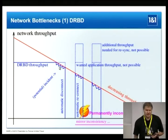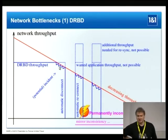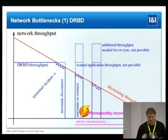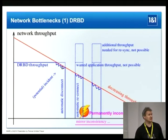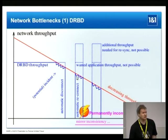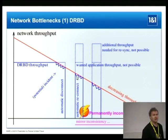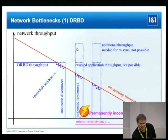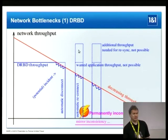But at a certain point you get a problem, because DRBD works synchronously — you have to write through all write operations to the secondary side. If that's not possible, you get high I/O latencies, and after a while DRBD has to disconnect automatically, otherwise your application would get stuck. Depending on DRBD configuration, it tries to reconnect later. During reconnect, the application load is constant but there's additional load from the resync traffic.